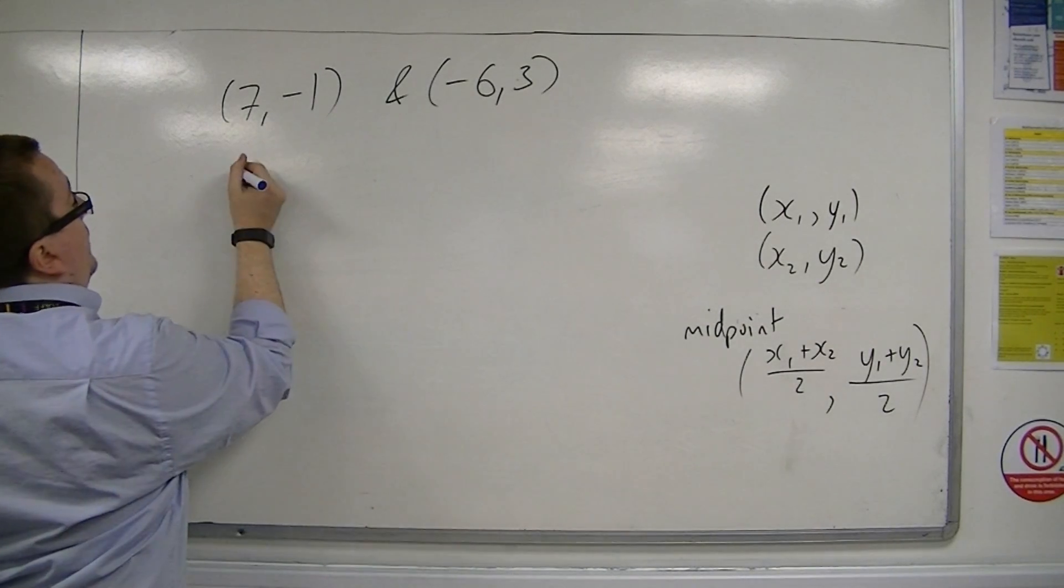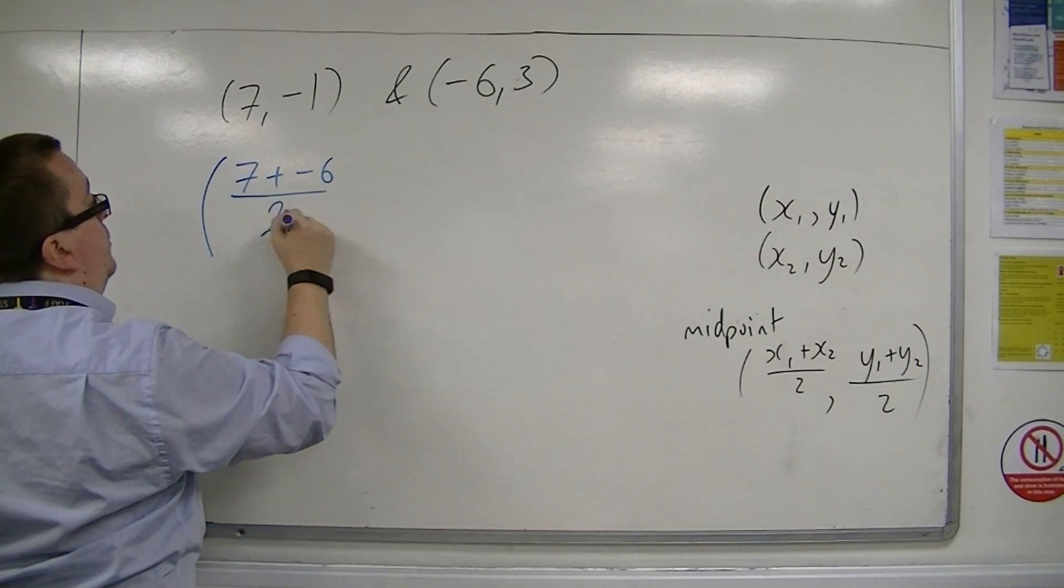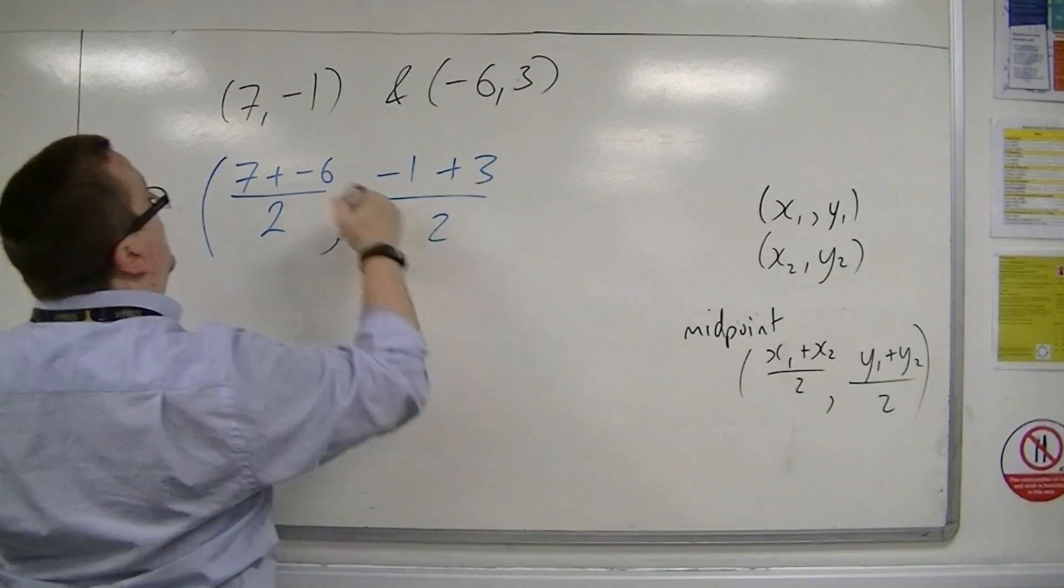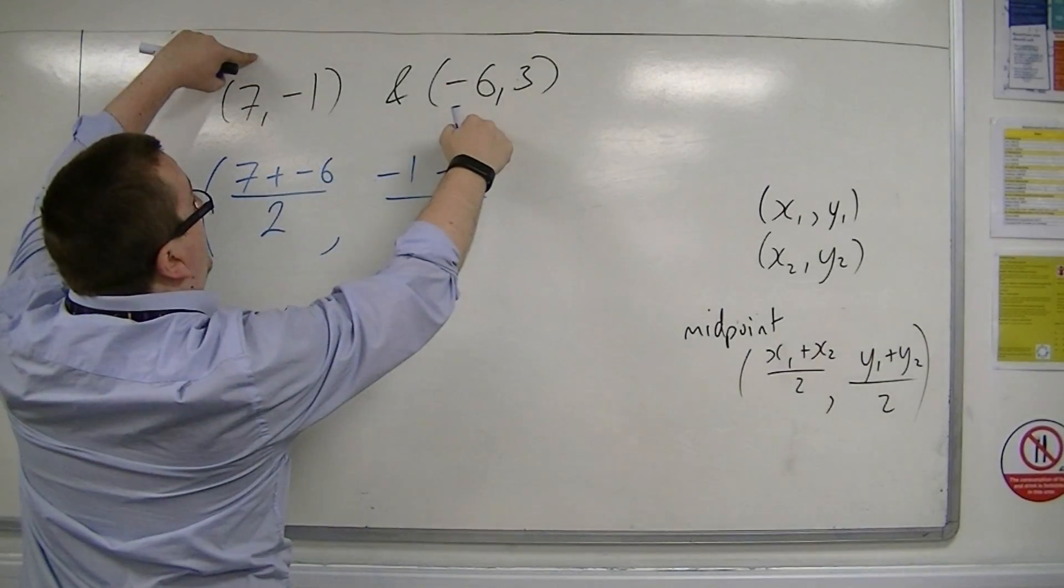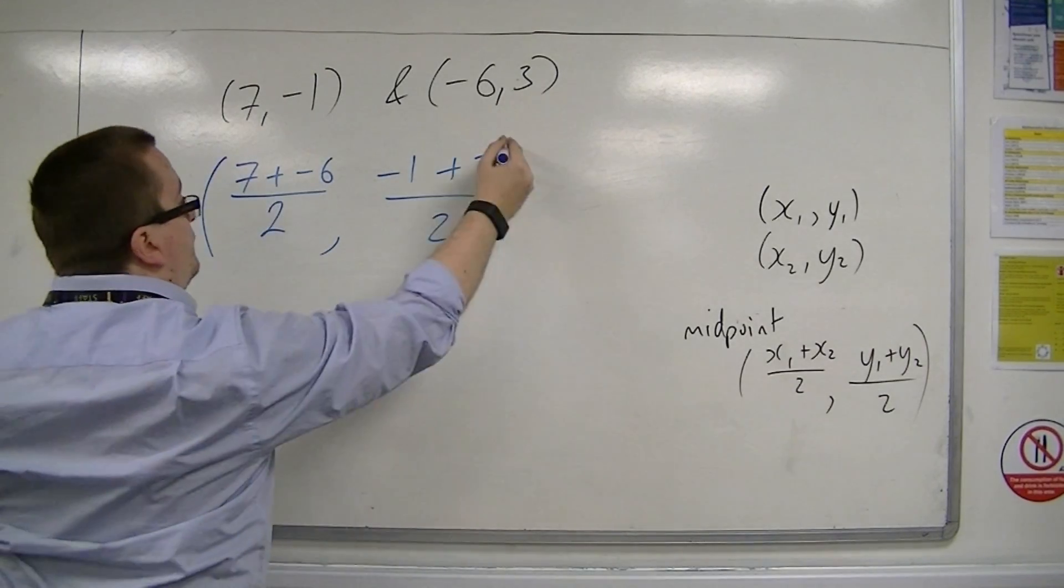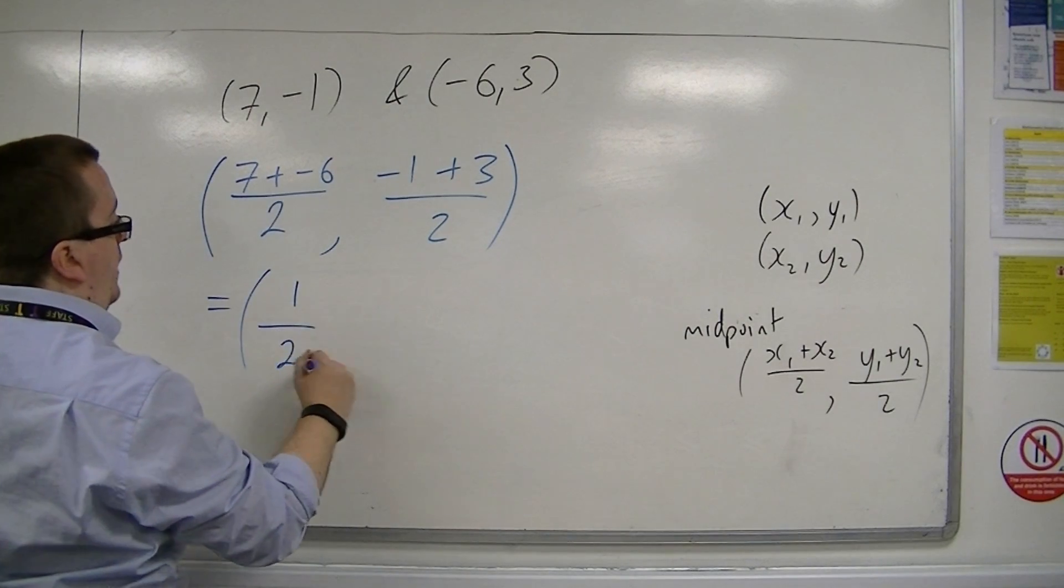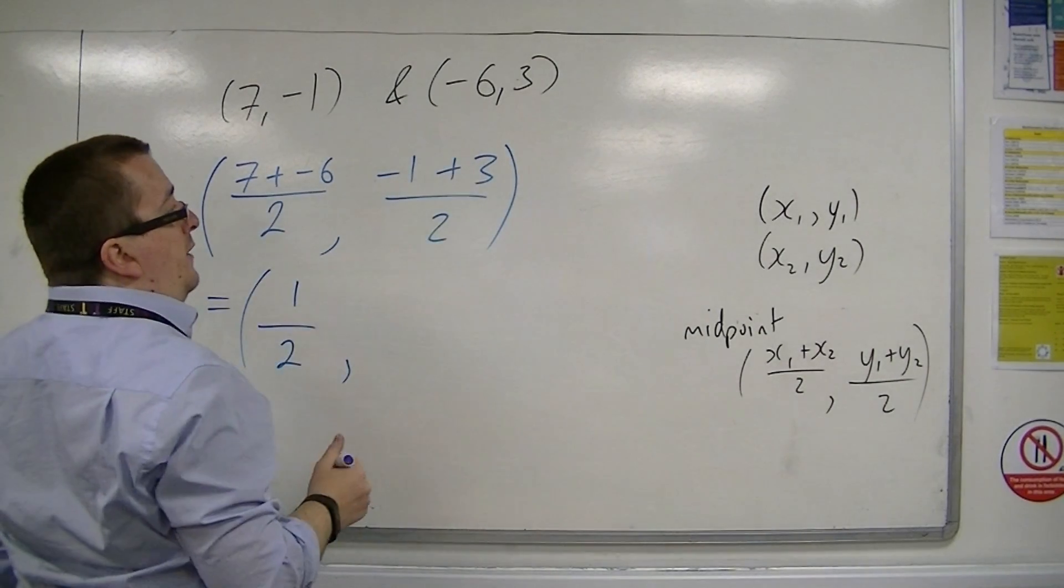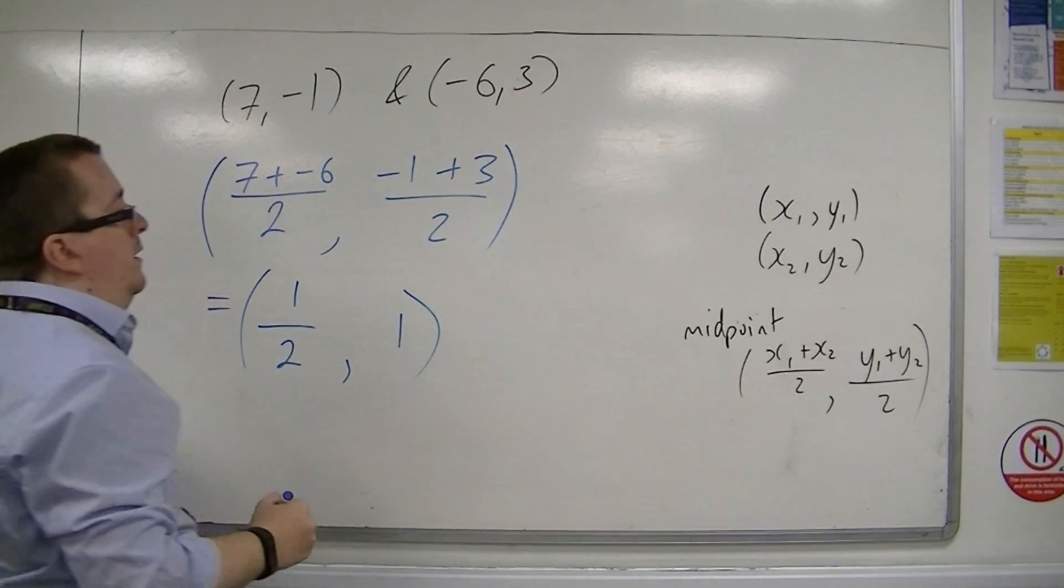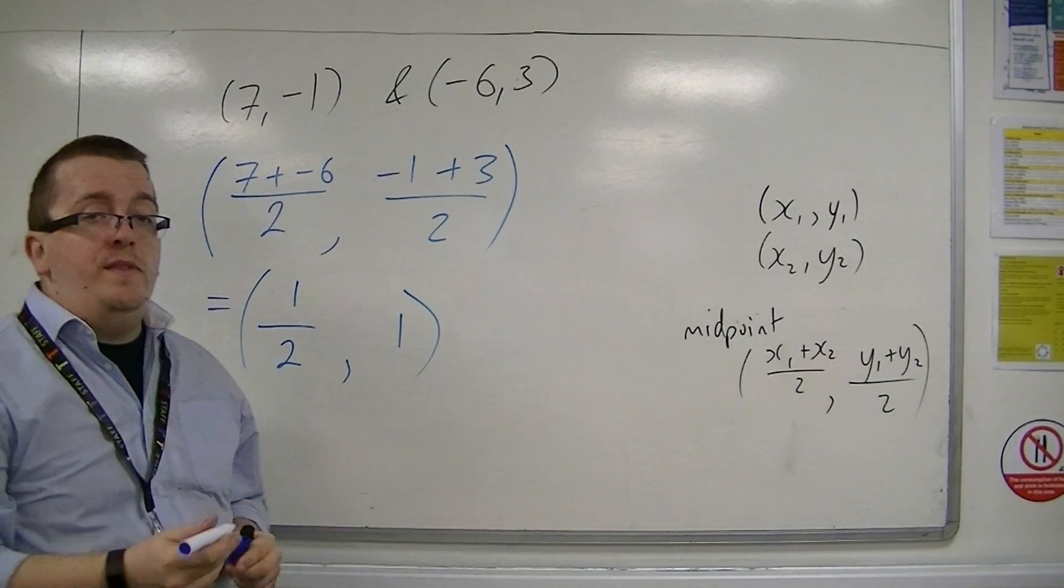Then using this, the midpoint will be 7 plus minus 6 over 2, and minus 1 plus 3 over 2. So I've got the x coordinates, 7 plus minus 6 over 2, and minus 1 plus 3 over 2 is 2 divided by 2 is just 1. So 1 half 1 would be the coordinates of the midpoint between those two.